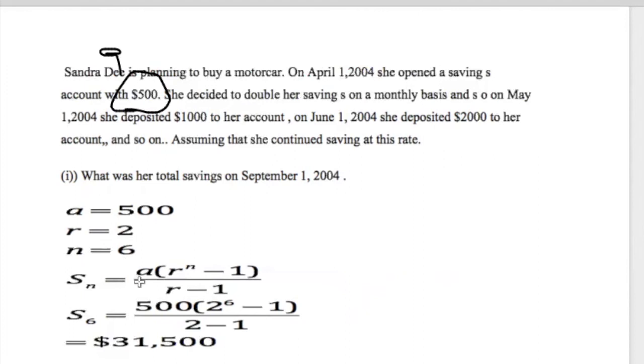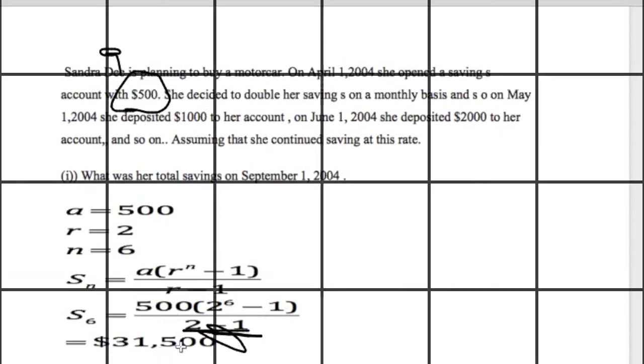After getting that, you substitute into the formula. Now, we know A is 500, R is 2, N which is 6, R which is 2 minus 1. So this part you enter in your calculator, now 2 minus 1 will be just 1. So by right, this will not affect anything. You have to have 2 to the 6 in your calculator, minus 1 will get the value. 2 to the 6 is just 64 minus 1. That's 63 times 500 will give you 31,500.